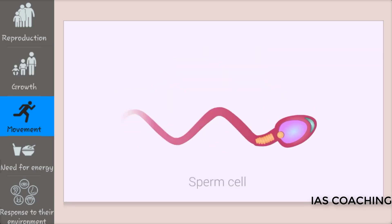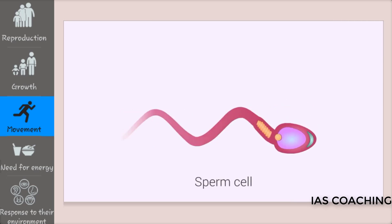Let's take the example of a sperm cell to see how cells move. A sperm cell uses its flagellum to propel itself through the female reproductive tract.